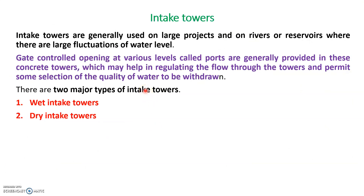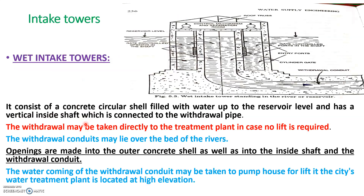Intake structures can be divided into two types: a river or reservoir intake can be divided into wet intake towers and dry intake towers. The major difference between a wet intake tower and a dry intake tower is that in a wet intake tower there is always a presence of water in that structure.